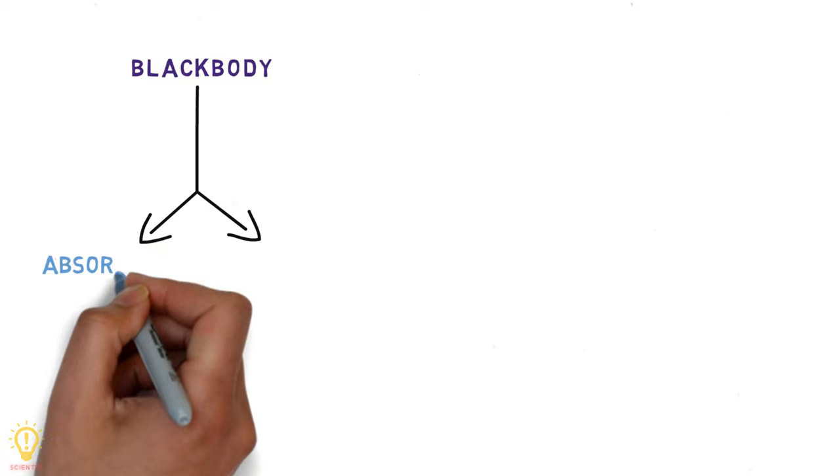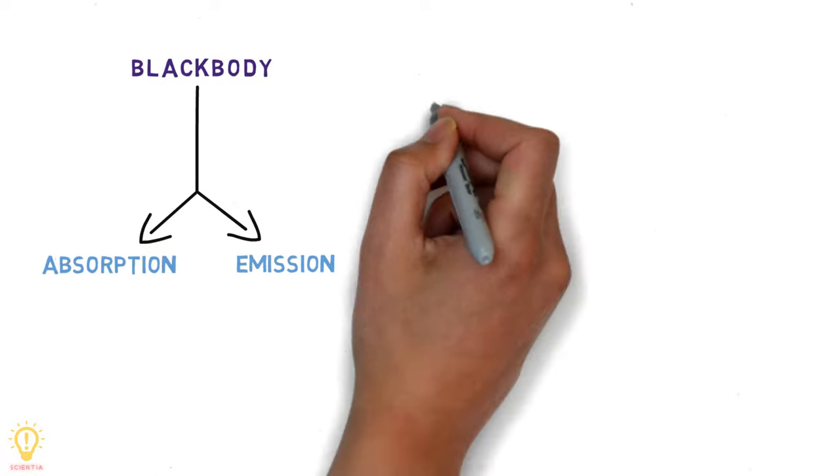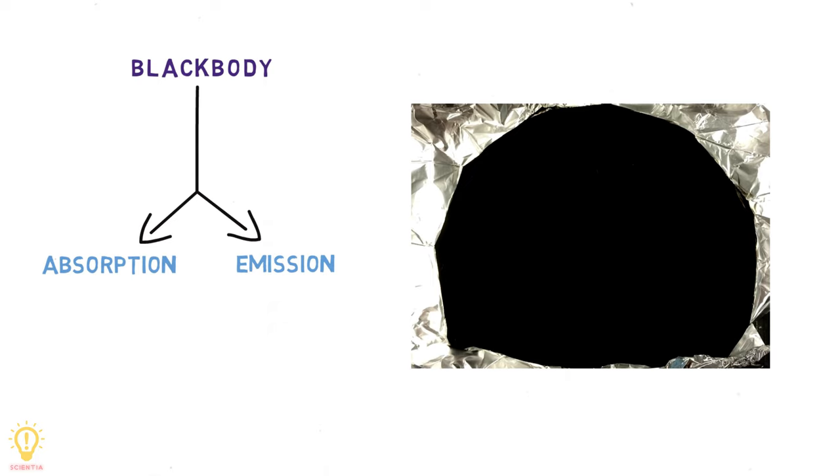When we deal with black bodies, we are concerned about the absorption and emission of radiation. A perfect absorber will not reflect any radiation, so it will look black to the human eye. That's why such objects are known as black bodies.